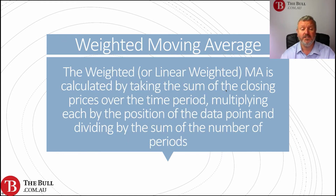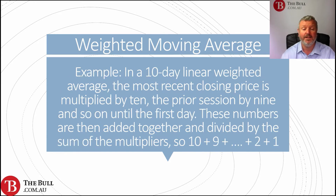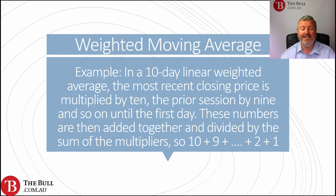A weighted moving average — the weighted or linear weighted moving average — is calculated by taking the sum of the closing prices over the time period, multiplying each by the position of the data point, and dividing by the sum of the number of periods. So the closer data gets a larger weighting. In the case of a 10-day linear weighted moving average, the most recent closing price is multiplied by 10, the prior session by 9, and so on until the first day. These numbers are then added together and divided by the sum of the multipliers: 10 plus 9 plus 8 plus 7, and so on down to 1.